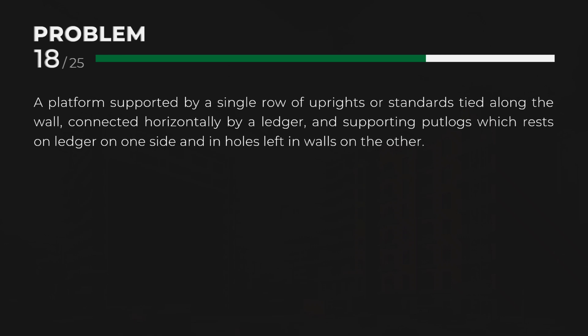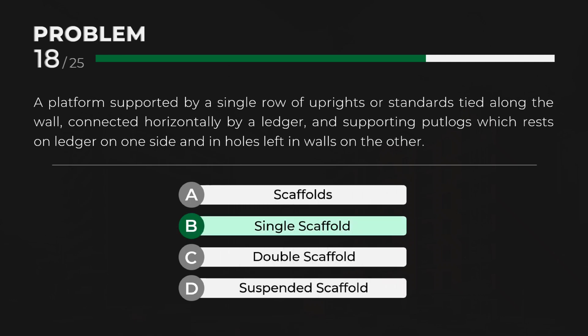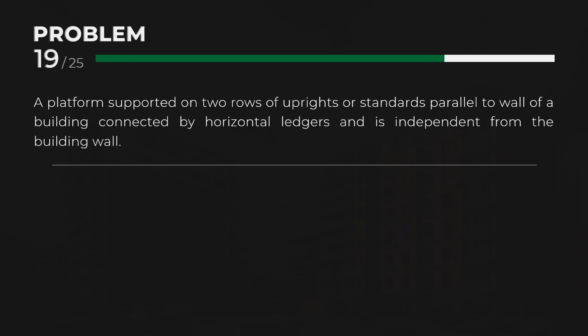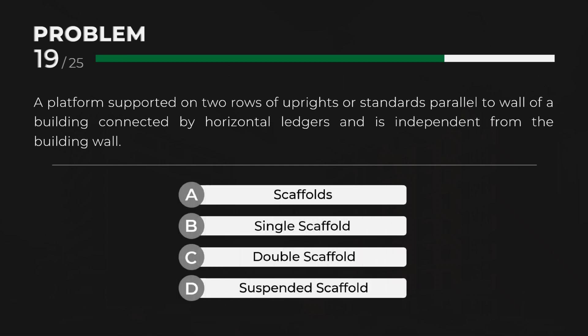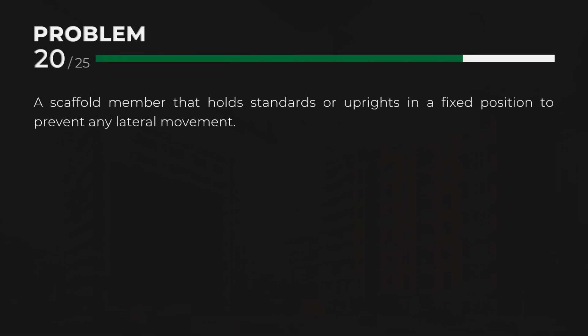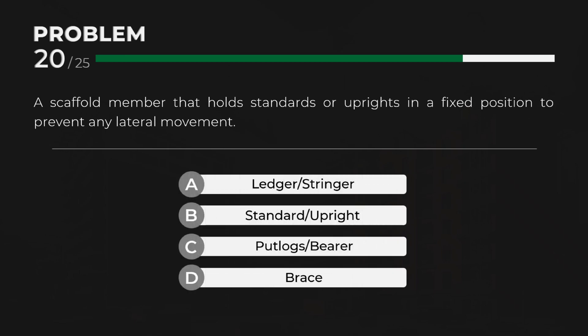A platform supported by a single row of uprights or standards tied along the wall, connected horizontally by a ledger, and supporting puttlogs which rest on the ledger on one side and in holes left in walls on the other. Answer: B, single scaffold. A platform supported on two rows of uprights or standards parallel to the wall of a building, connected by horizontal ledgers and independent from the building wall. Answer: C, double scaffold. A scaffold member that holds standards or uprights in a fixed position to prevent any lateral movement. Answer: D, brace.